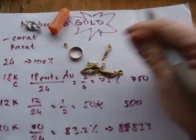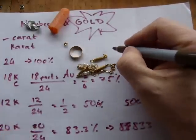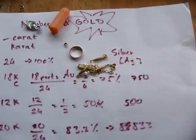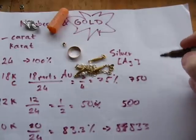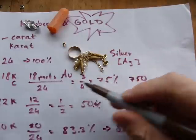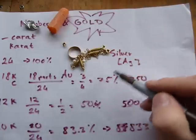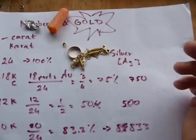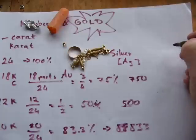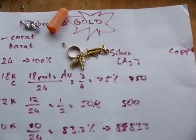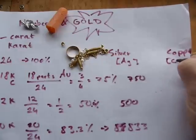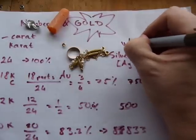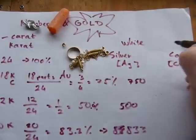Alloying means mixing in another element. Typically what's added to gold is silver — Ag in chemistry — and mixing silver with gold makes white gold. So when you have 75% gold or 18-carat gold, the remaining 25% might be silver or another white metal like nickel, although many people are allergic to nickel. You can also add copper — Cu in chemistry.